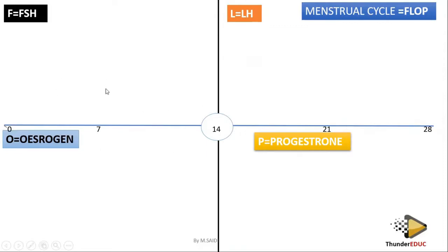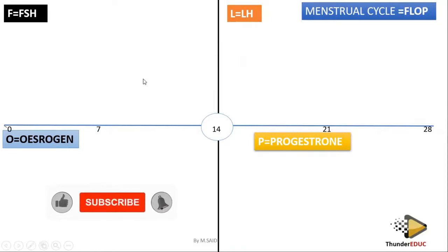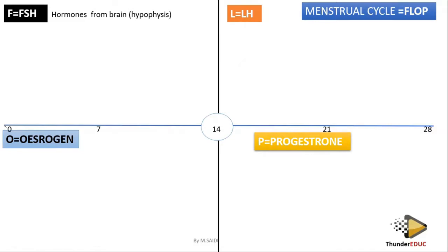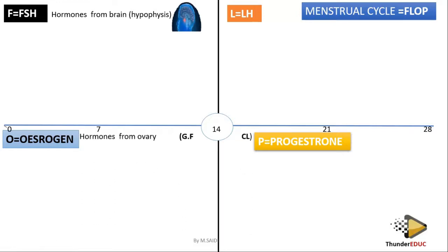Each hormone is going to be working in its own box. From there, you need to know where each hormone is produced. The first two hormones — follicle-stimulating hormone and luteinizing hormone — are produced from the brain, specifically the hypophysis, also called the pituitary gland. The other two, estrogen and progesterone, are produced from the ovary.